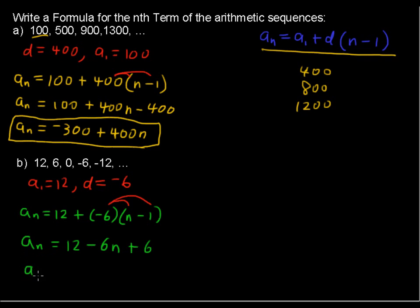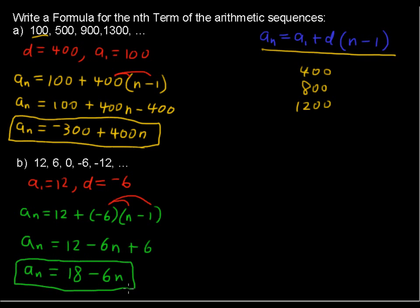So a sub n equals 18 minus 6n. It may seem a little disconcerting to see 18 here, but if we plug in 1 for n to find the first term, we get 18 minus 6, which is indeed 12. So this general form does work — use it to find the nth term of arithmetic sequences.